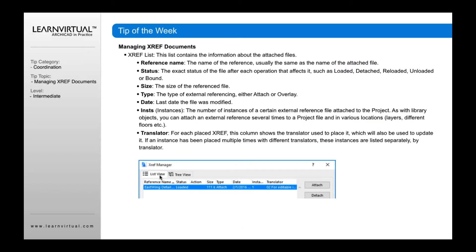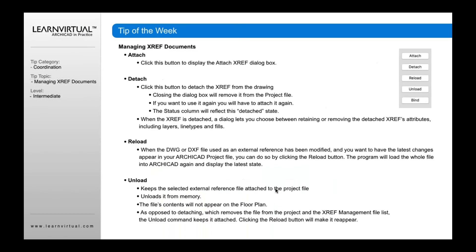When you open your Reference Manager, you have a variety of options to view the information. The reference name is the first option. The second is the status — is it loaded, detached, reloaded, unloaded, or bound? Then there's any appropriate action, the size of the referenced file, the type — is it attached or overlay? The date it was last modified, any instances, and the translator used to reference it.